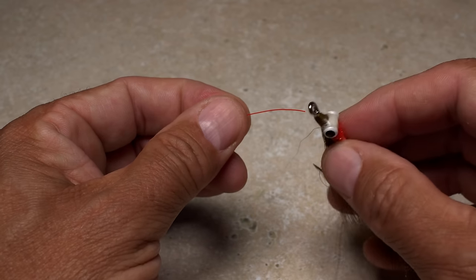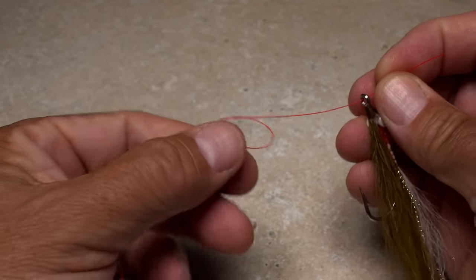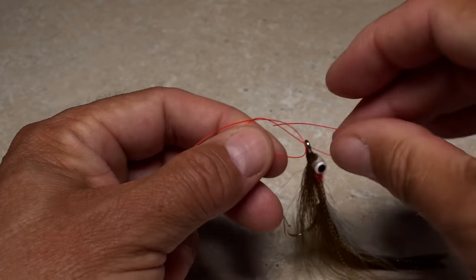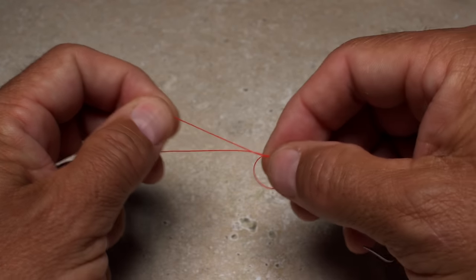Get hold of the tag and feed it through the eye of the hook. It doesn't matter in which direction. Pull the tag through the eye and insert it down away from you through the loop formed by the overhand knot.